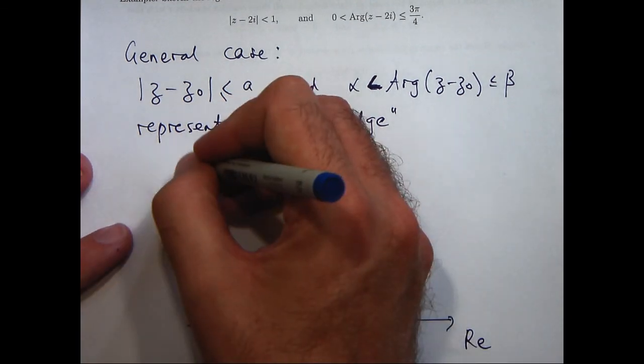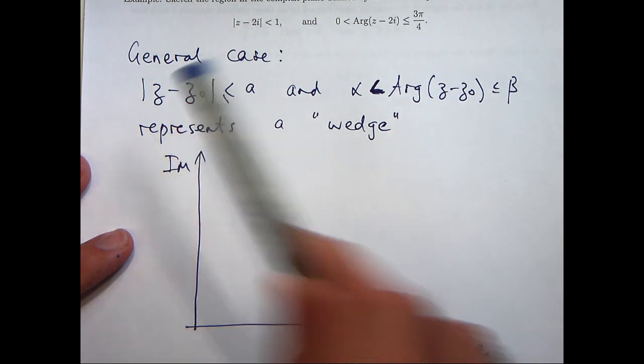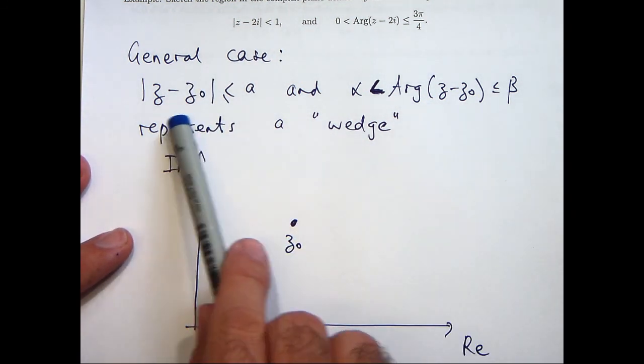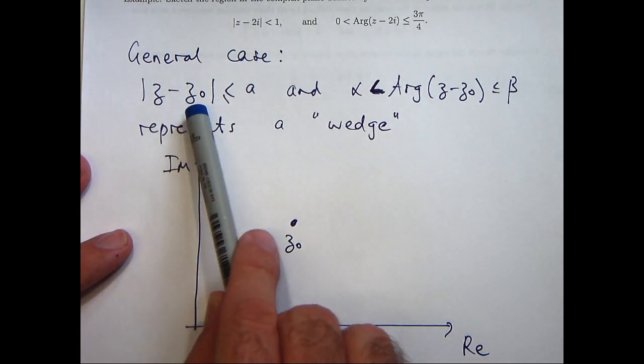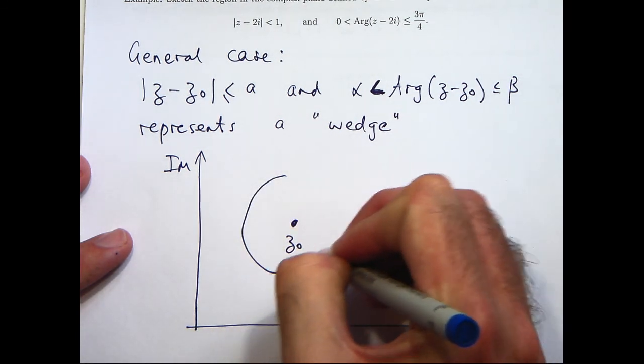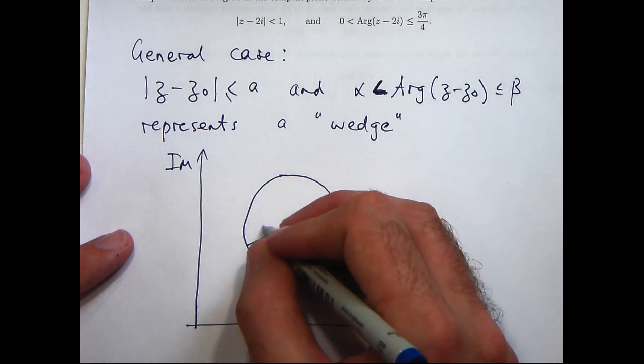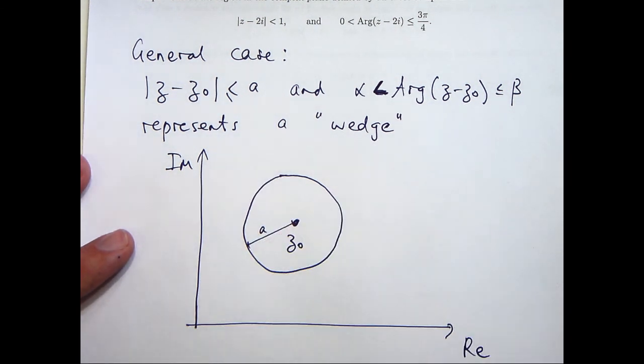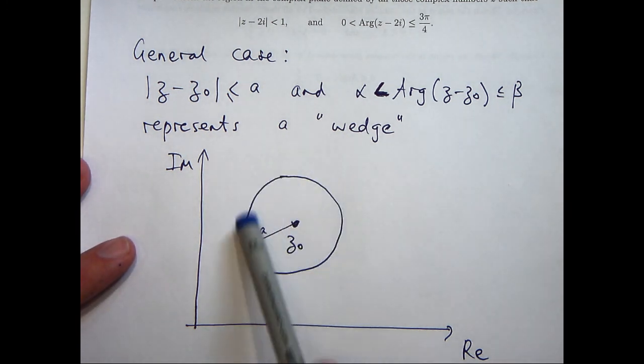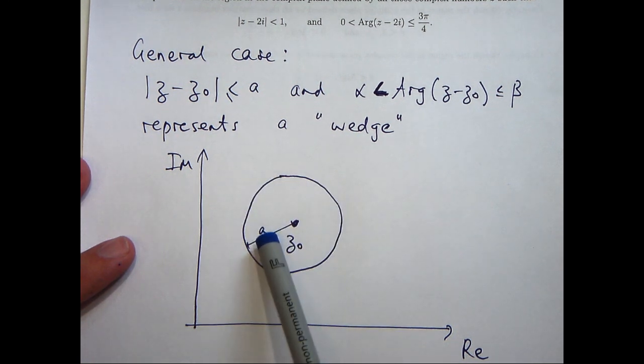So here are our axes. So first of all we move to z0, say it's here, and we draw a circle around z0 with radius a. So what we would like to do is include all those complex numbers that surround the point z0 within this radius.